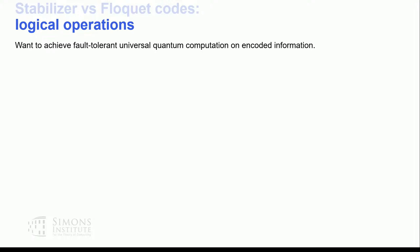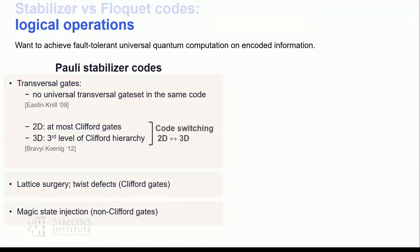For fault-tolerant quantum computation, we want to do universal quantum computation while keeping the logical state encoded, and we want errors not to propagate too much when we apply each unitary. The favorite methods include transversal gates, which require basically no space-time overhead and are naturally fault-tolerant because they're finite depth and local, meaning errors cannot propagate.